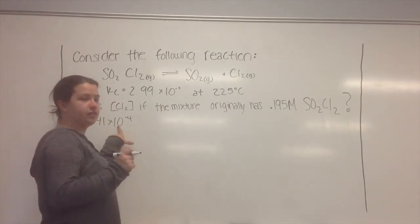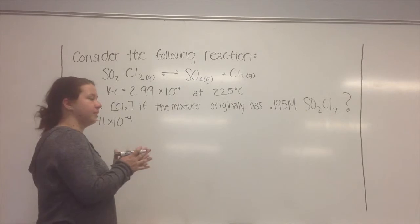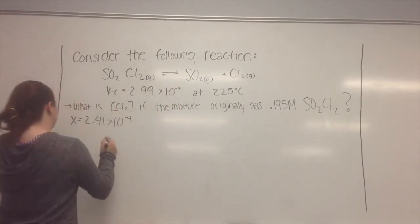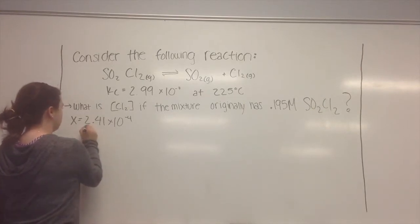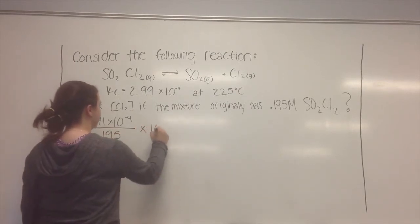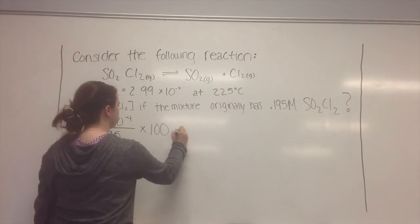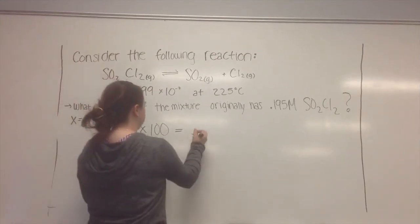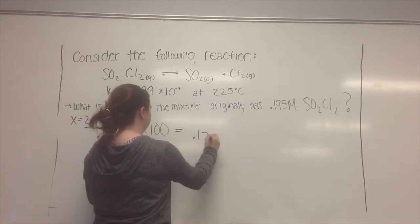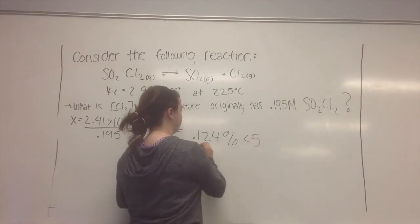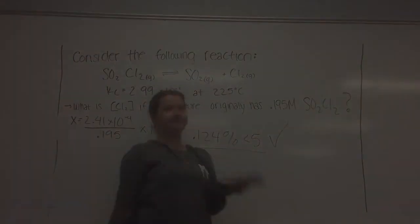So to do that, we'll take this number divided by 0.195 times 100, and we'll see what answer that gives us. Alright, that number gives us 0.124%, which is less than 5, so it all works out. Thank you.